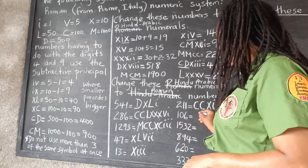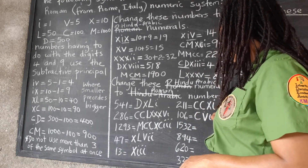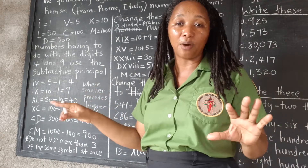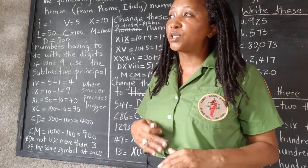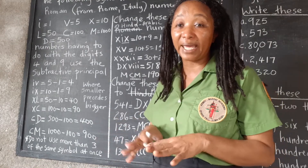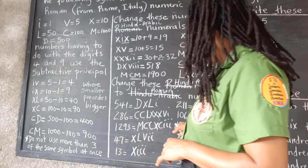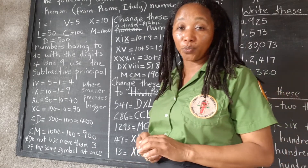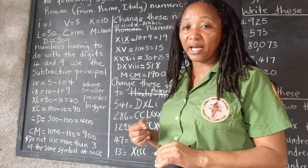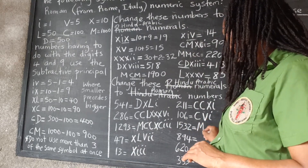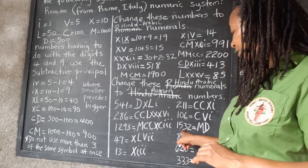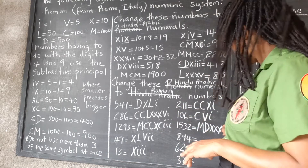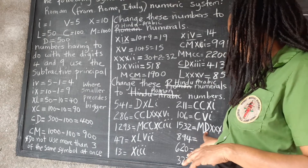For 106: that's a 100 — C — and then 5 and 1 — VI — so 106 is CVI. For 1,532: 1000 is M, 500 is D, 30 would be three 10s — XXX — and then two 1s — II. So 1,532 is MDXXXII.